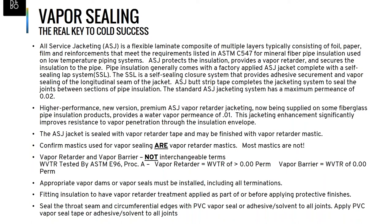The terms vapor retarder and vapor barrier are not interchangeable, though people often use them that way. Vapor retarding materials need to provide a perm rating of 0.02 or lower. Materials with higher perm ratings are not appropriate for typical mechanical insulation systems. An installation detail gaining attention in recent years is the use of vapor dams or vapor seals — intended to stop migration of water through the insulation envelope should the vapor retarder fail, isolating any problem to a specific section rather than allowing it to spread throughout the system.